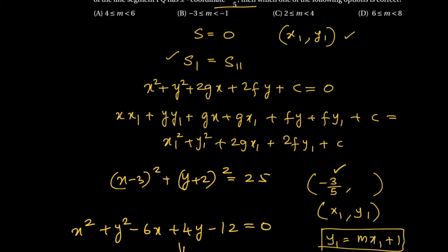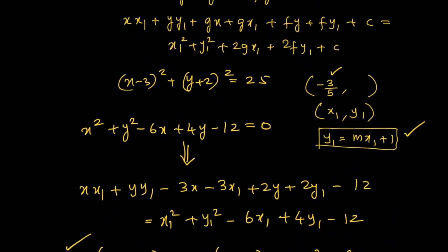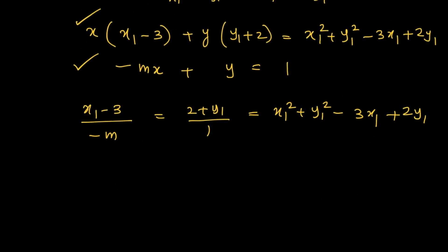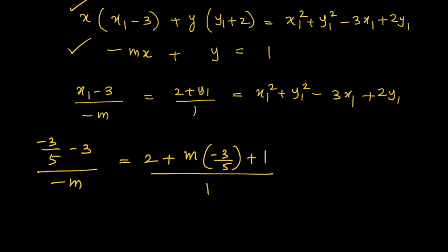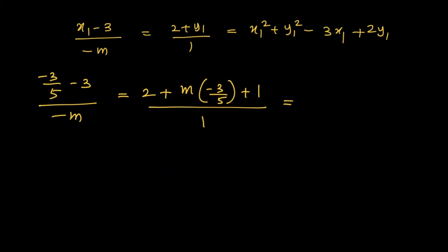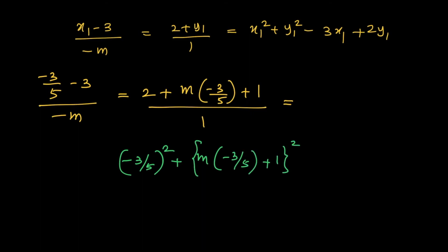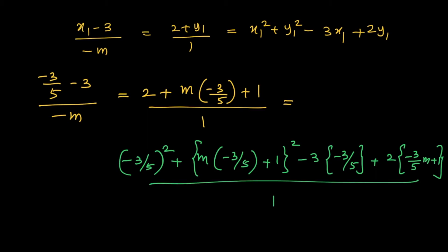We have x₁ = −3/5 and y₁ = mx₁ + 1. Substituting: (−3/5 − 3)/(−m) = (2 + m(−3/5) + 1)/1 = (−3/5)² + (m(−3/5) + 1)² − 3(−3/5) + 2(m(−3/5) + 1). The denominator is 1, so just simplify.